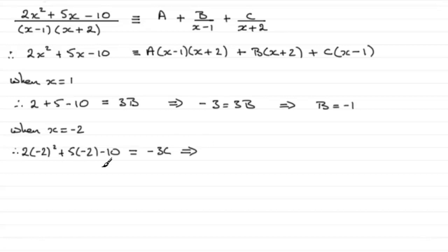So if we work this out we've got minus 2 squared is 4, 4 times 2 is 8, and then we've got minus 10 so that's minus 2, and then we've got minus another 10 so that's minus 12. Minus 12 is equal to minus 3c. Divide both sides by minus 3 and you end up with c equaling 4.